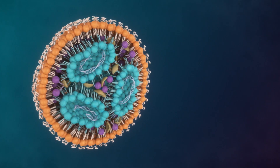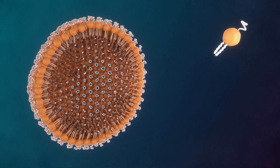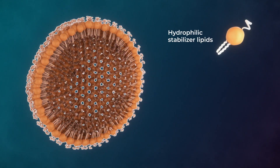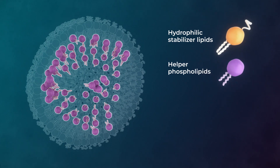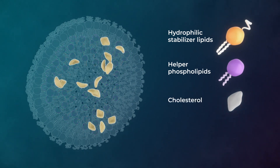Hydrophilic stabilizer lipids help regulate size and circulation time in the bloodstream. Helper phospholipids aid in stability, intracellular uptake, and endosomal escape. Cholesterol binds to apolipoprotein E and mediates endocytosis.